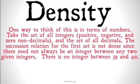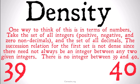One way to think of this is in terms of numbers. Take the set of all integers — positive, negative, and zero — non-decimals, just full whole numbers. Compare that to the set of all decimals. The succession relation is the relation that numbers bear to each other, so one succeeds zero, two succeeds one — basically 'is after' on a timeline. For the first set, the succession relation is not dense, since there need not always be an integer between any two given integers. Between 39 and 40, for example, there is no integer — no whole number in between them. So the set of all integers does not have a dense succession relation.